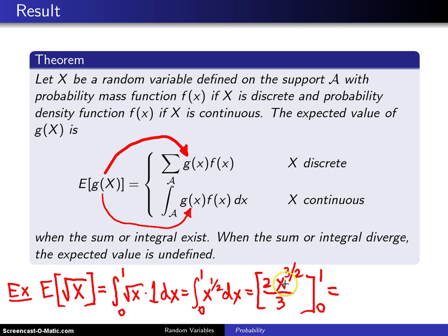When you plug in a 1, you get just 2 thirds, and when you plug in a 0, you get 0. So we get 2 thirds, which is exactly what we got by the analytic solution in the motivating example.